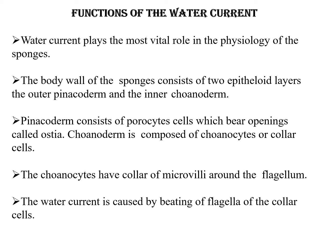The water current plays a very important role in the physiology of sponges. The body wall consists of two layers: the outer pinacoderm and the inner coanoderm. The pinacoderm layer contains special cells called porocyte cells, which bear openings called ostia. The inner layer, the coanoderm, is composed of special cells unique to porifera called choanocytes or collar cells. The choanocyte cells have a collar of microvilli around the flagellum, and the water current is caused by the beating of the flagella of these collar cells.